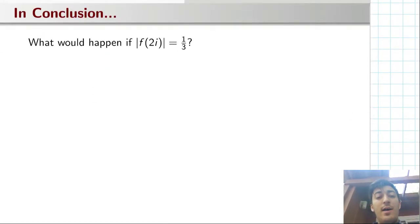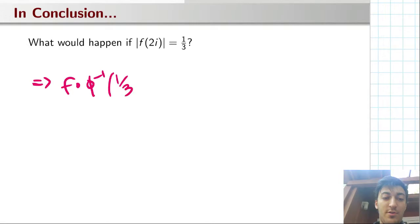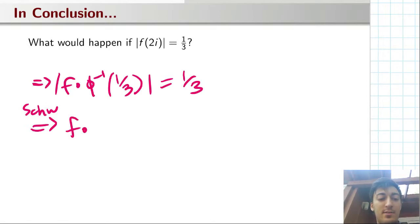So if this is true, if |f(2i)| is exactly one third, then that means that |f ∘ φ^(-1)(1/3)| is equal to a third. But then the second half of Schwarz's lemma gives us that this composition is a rotation. So in other words, there is some α in the boundary of the disk—it just says modulus 1, it's in the boundary of the disk, same thing—such that...